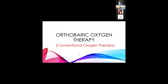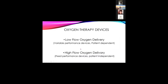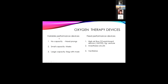Normobaric oxygen therapy — this is called conventional therapy. There are two categories of delivery devices: low flow oxygen delivery, which uses variable performance devices and is patient-dependent; and high flow oxygen delivery, which uses fixed performance devices and is patient-independent. Variable performance devices include nasal cannula, simple face mask, and large-capacity non-rebreather mask. Fixed performance devices include high air flow entrainment devices such as Venturi masks, anesthesia circuits, and ventilators.